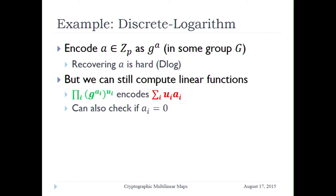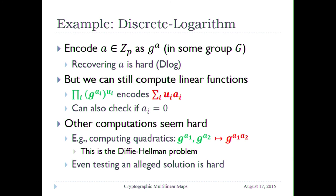If you have g^{a_i}'s and coefficients u_i's and you want to compute the inner product in the exponent, you can do that just by exponentiating and multiplying in the group. And another thing you can do is check if an encoded value is equal to zero, because if a_i is zero, then g^{a_i} is one, and that you can check. On the other hand, we need hardness in crypto. Here is the hardness for discrete log: anything that's not linear seems to be hard. In particular, quadratics seem to be hard. If you have g^{a_1} and g^{a_2}, getting g^{a_1 · a_2} — that's the Diffie-Hellman problem — seems hard to compute.